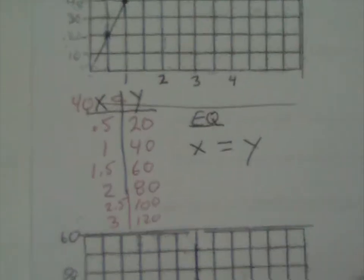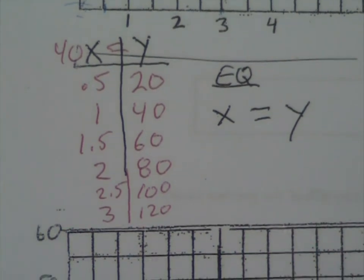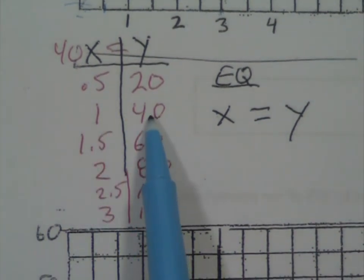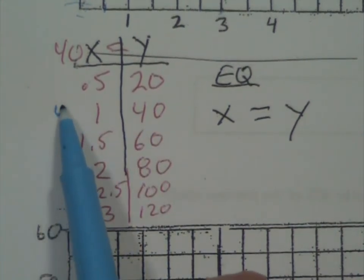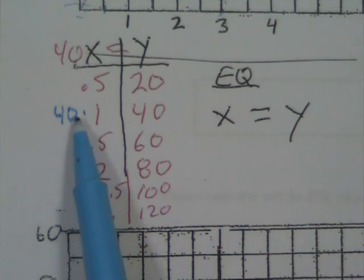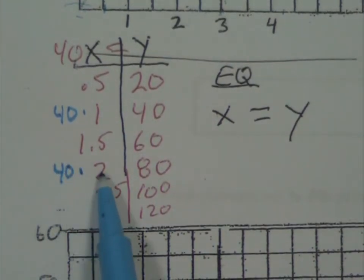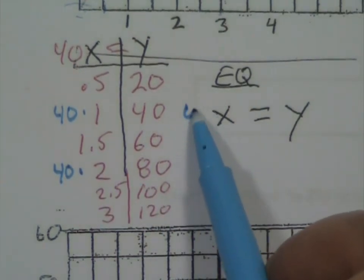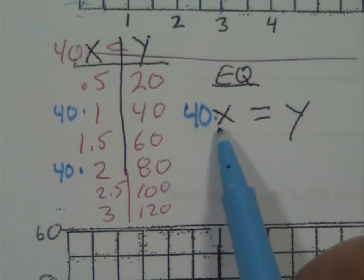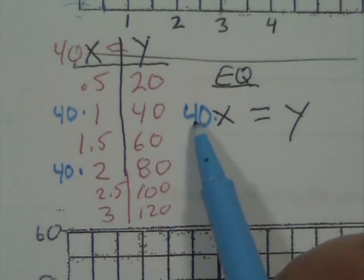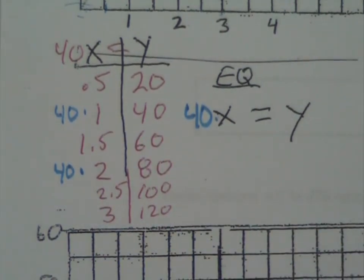If we look in here, now we need to write an equation by looking at it, and so we want to know what do we do to x to get y? Well, if you notice on this one, to get 40, I would have to multiply by 40. 40 times 1 is 40, and same thing here, 40 times 2 is 80. So our equation is going to be 40 times x, or 40x, equals y, because whatever is in x, multiply by 40 and you would get y.